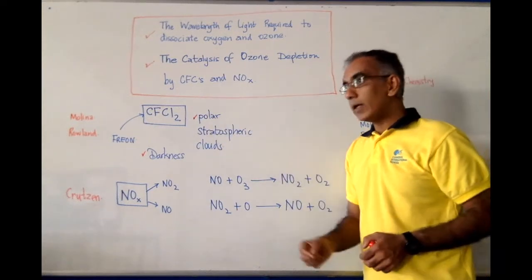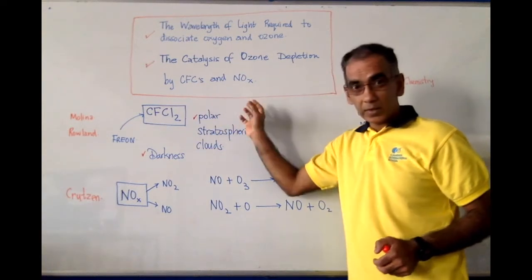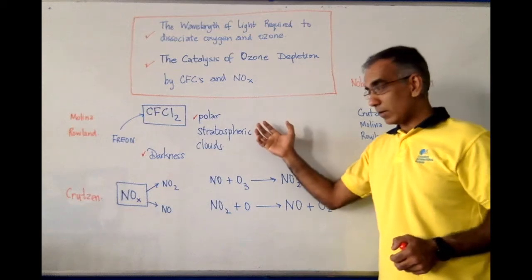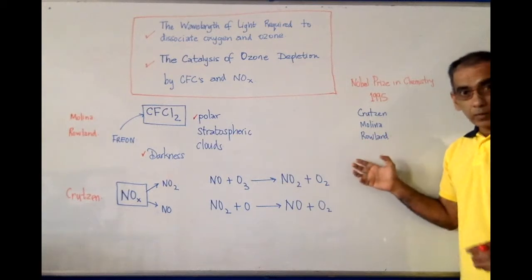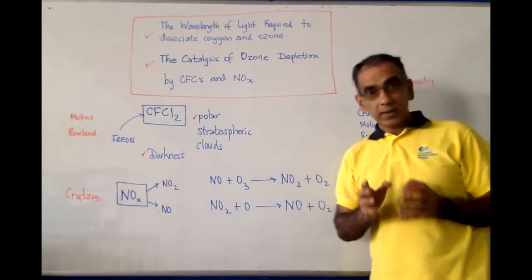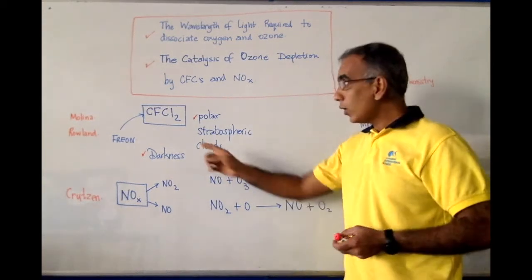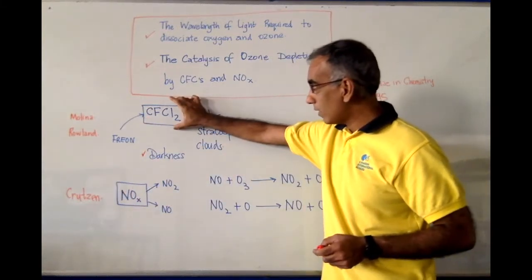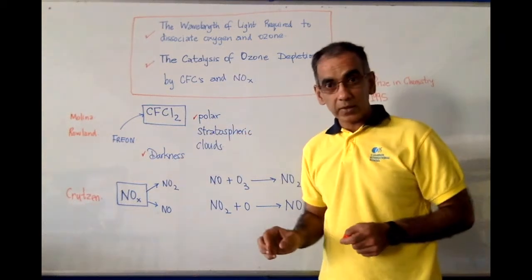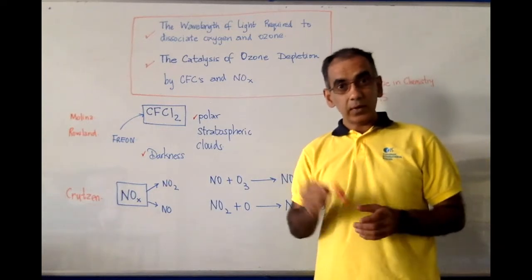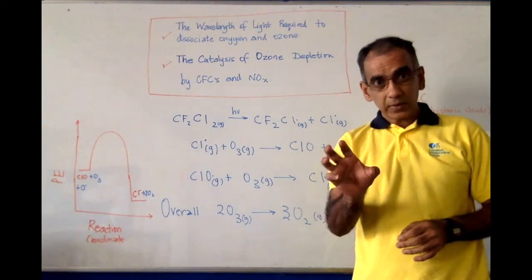This was followed by the work of Molina and Rowland in demonstrating how the CFCs posed a threat to the ozone layer involving a similar mechanism. And these three researchers were rewarded for their groundbreaking work with the Nobel Prize in Chemistry in 1995. But let's go in closer now and take a more detailed look at the work of Molina and Rowland in explaining the connection between CFCs, polar stratospheric clouds, the darkness of the Antarctic winter and the depletion of the ozone layer. Let's look here now specifically at how CFCs deplete the ozone layer.